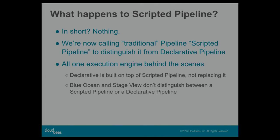An important thing to touch on is what declarative pipeline means for scripted pipeline. In practice, it doesn't mean anything — both still exist. Declarative pipeline is very much built on top of scripted pipeline; it's not a separate thing. It's a new syntax for pipeline, and we're now calling traditional pipeline 'scripted pipeline' so you can distinguish between the two. The visualizations like Blue Ocean and Stage View don't see any difference between a declarative and scripted pipeline run because they're all still generating stages and running steps within stages.